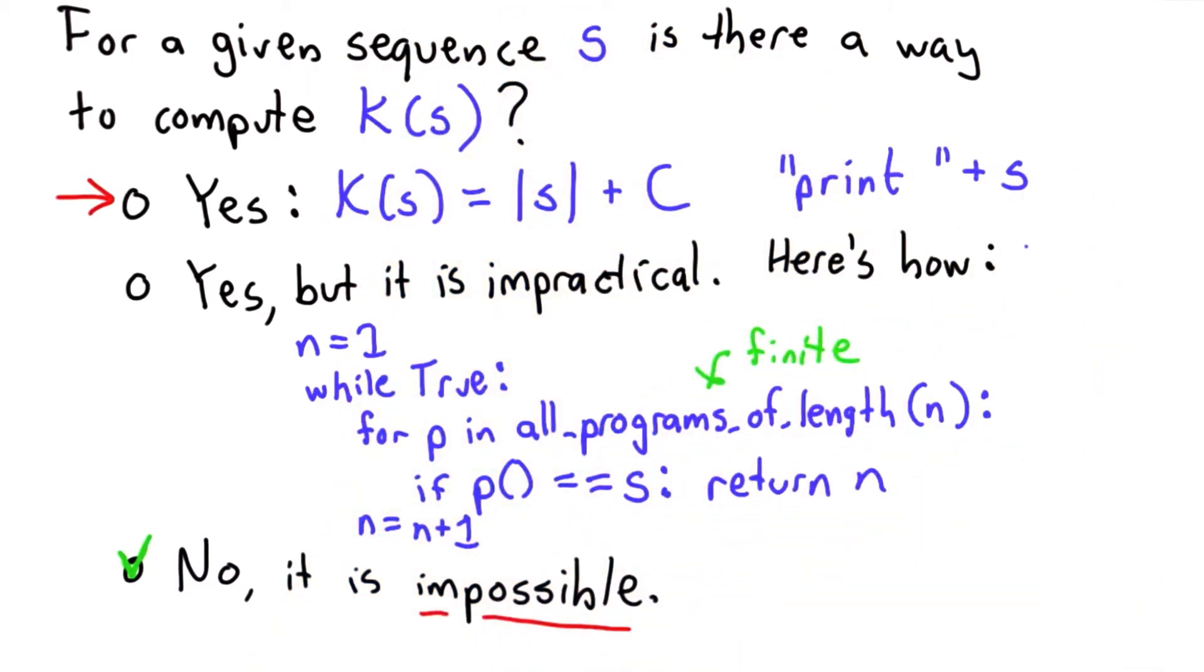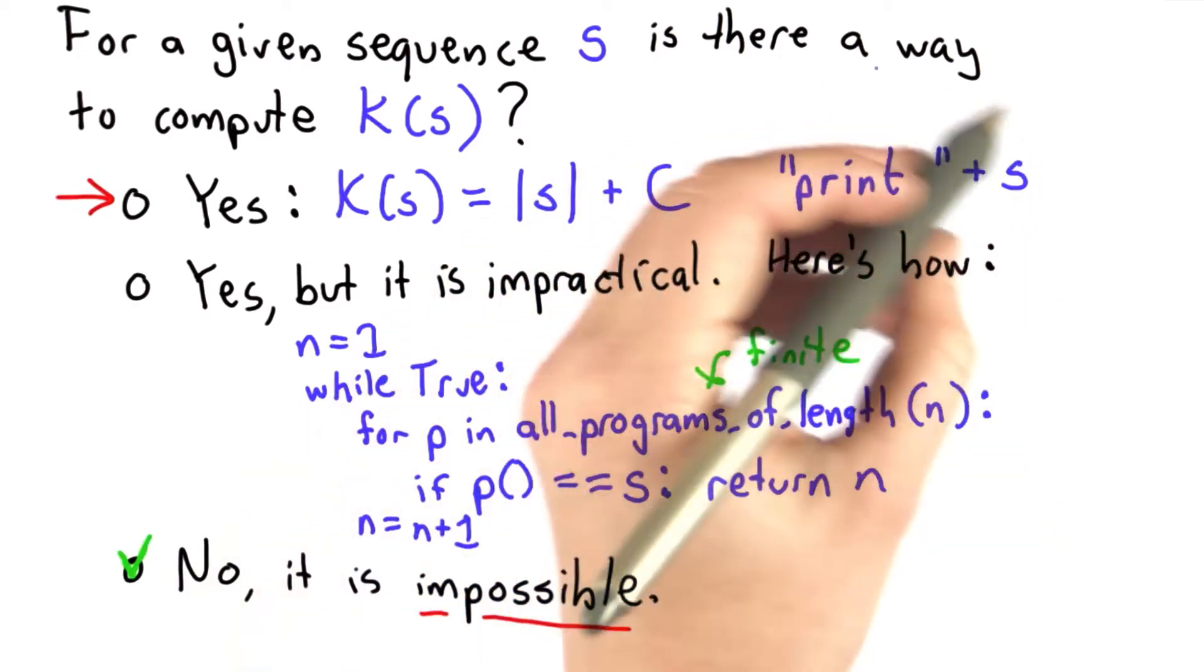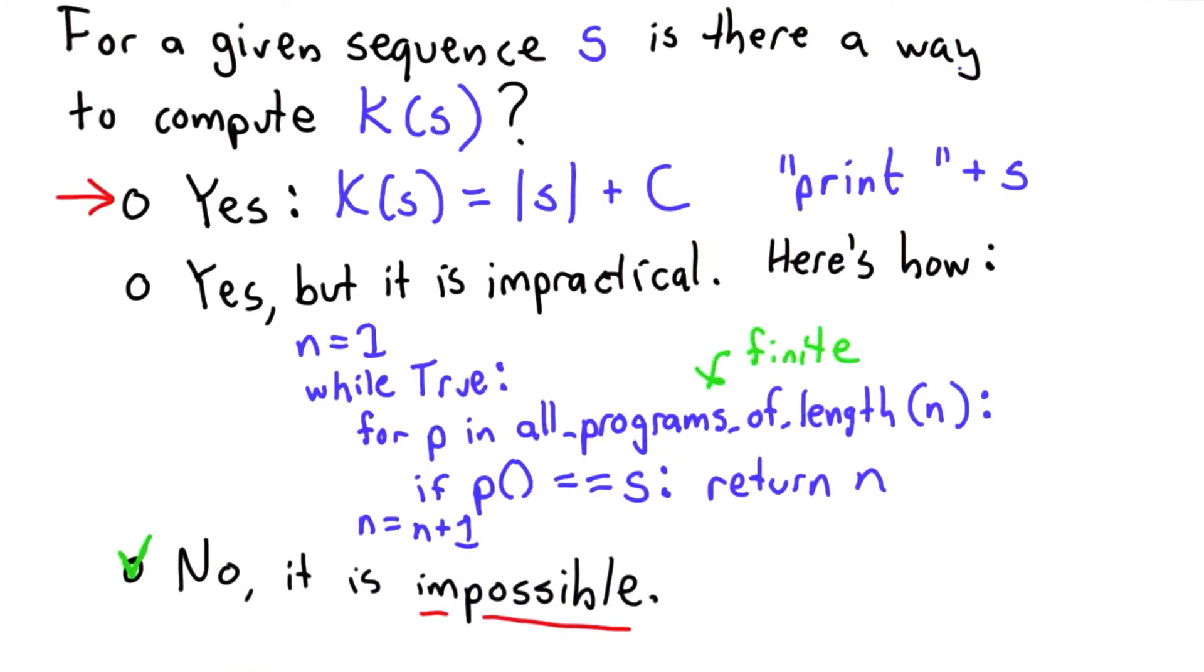That would print out the sequence s. Its length would be the length of s plus the 5 characters for the print plus 1 for the space. But that doesn't prove that there isn't a shorter program that can produce s.